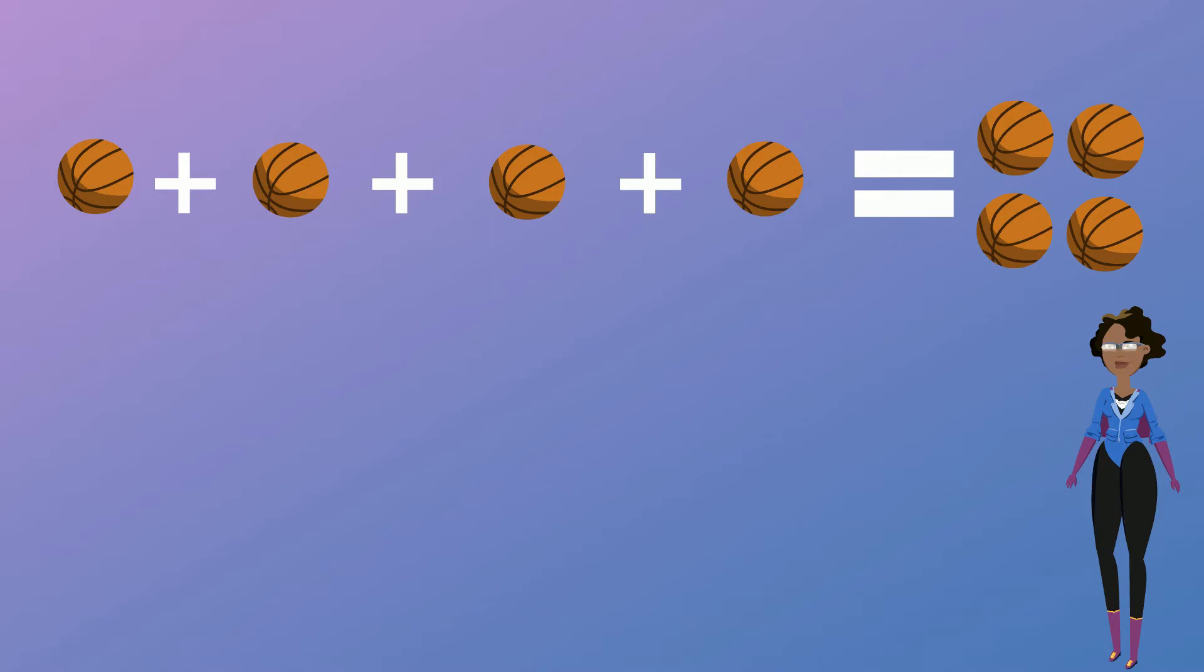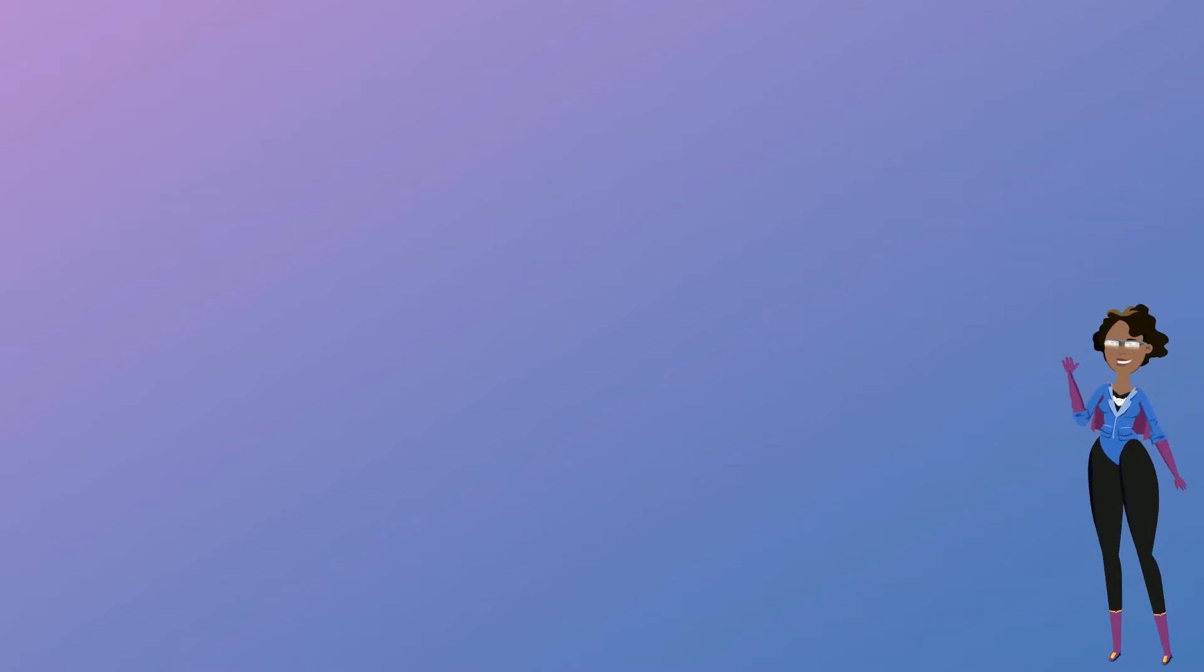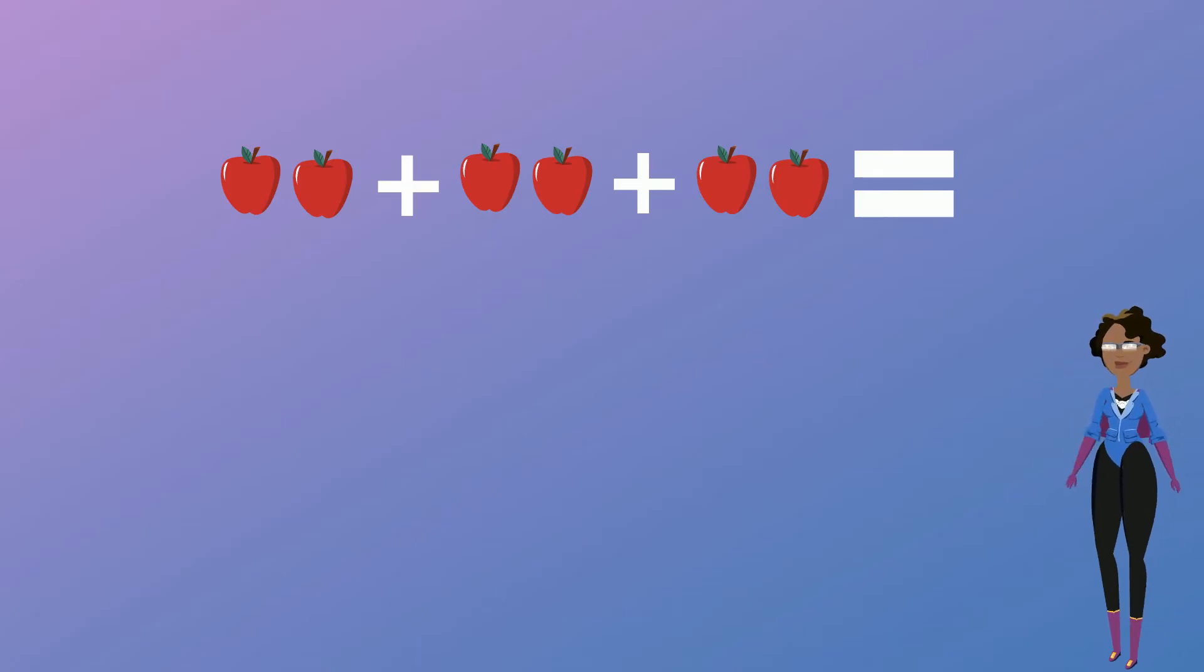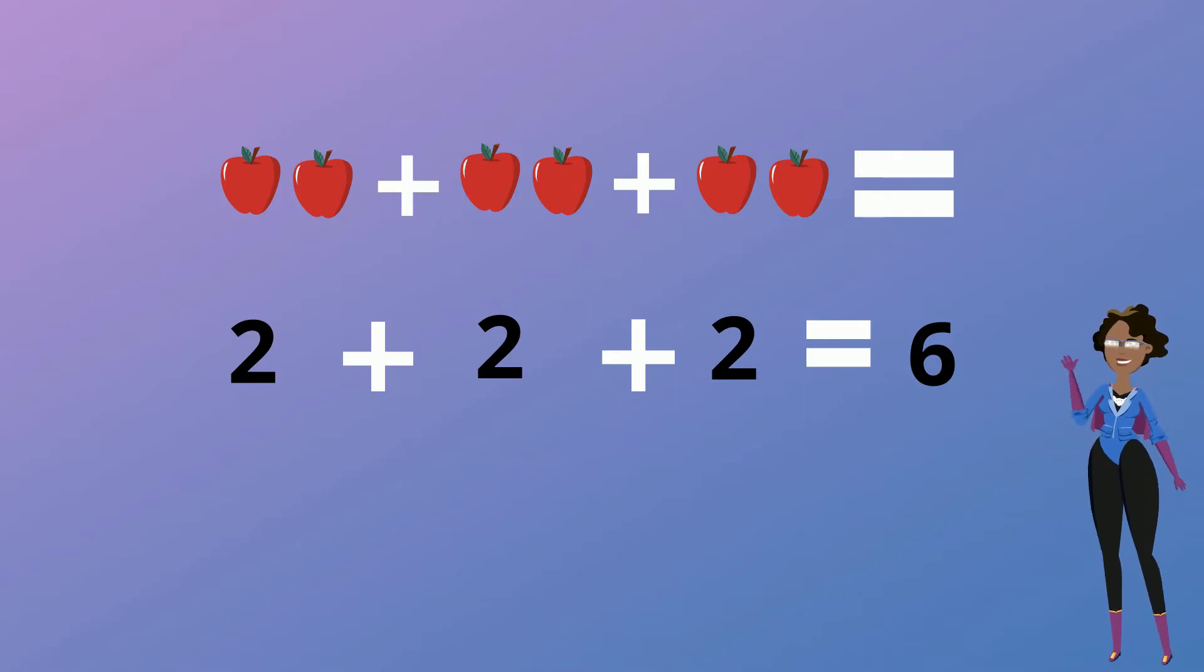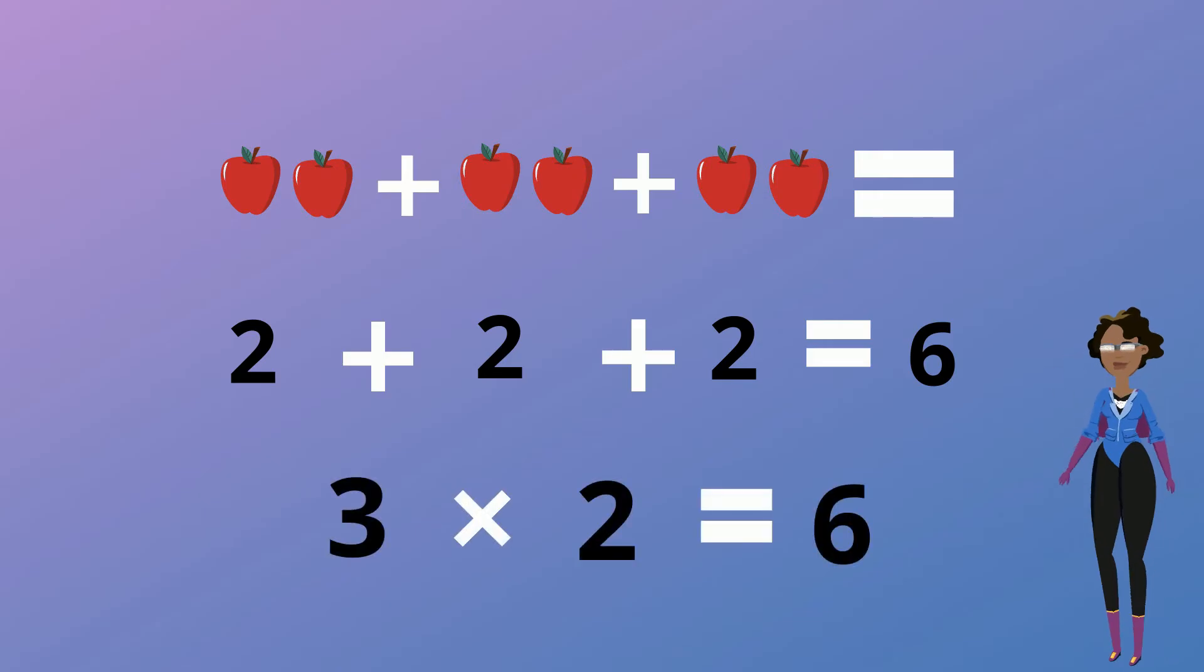Let's check this out. Look at the addition of the apples below. The repeated addition for this would be 2 plus 2 plus 2 which is equal to 6. And the multiplication would be 3 multiplied by 2 which is also equal to 6. This represents 3 sets of 2 equals 6.